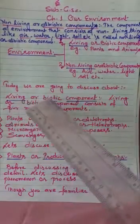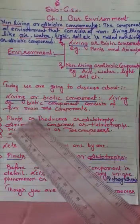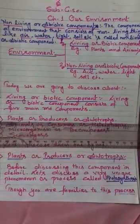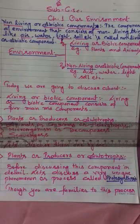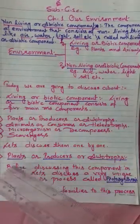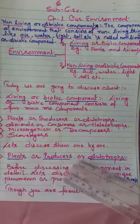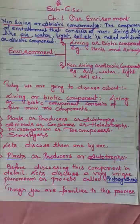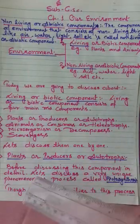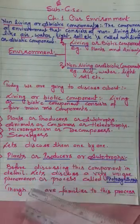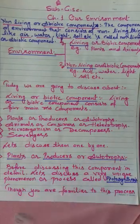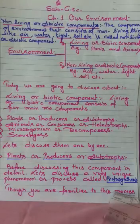We are going to discuss these four components in detail. First I am taking up plants — also called producers or autotrophs. Before discussing this component in detail, let's discuss a very unique phenomenon or process called photosynthesis, though you are already familiar with this process.